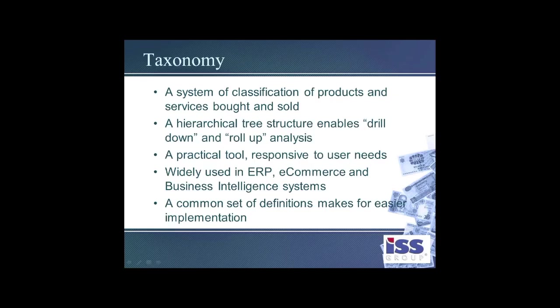A taxonomy is a system of classification — in this case, of products and services bought and sold. It creates a hierarchical tree structure that allows you to drill down between various levels and categories, as well as roll up the output to do analysis at a higher level. This is widely used in the ERP space, and companies with e-commerce systems use their business intelligence capabilities to analyze this output. Because this is a common set of definitions, it makes it much easier to implement with more resources, partners, and support.